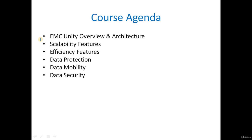Next, we will look at data security — how we can secure data residing on the Unity platform. Then we will talk about networking concepts. As we know, Dell Unity is a unified storage platform that offers both SAN and NAS from a single platform. We will cover how NFS, CIFS, FC, and iSCSI are configured and what networking features are used for high availability and load balancing.